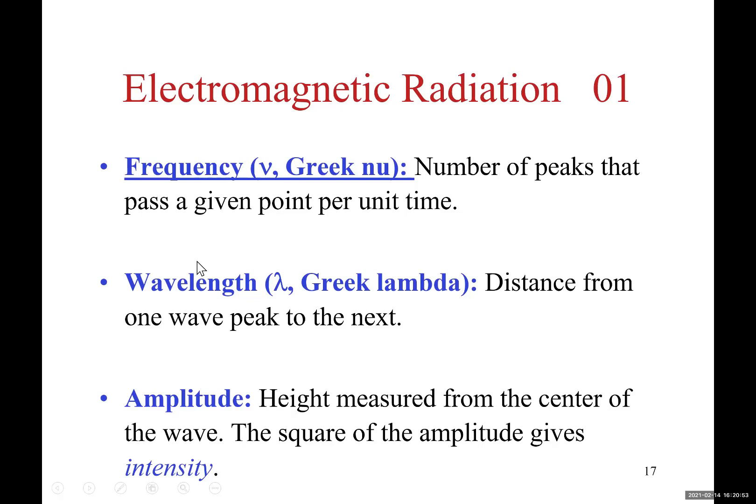Electromagnetic radiation has wavelengths. We use lambda to show wavelengths, which is the distance between one wave peak to the next. Waves have amplitude, and amplitude shows intensity of the light. The brighter the light, the higher amplitude. Amplitude is the distance of the peak of the wave from the center of the wave.